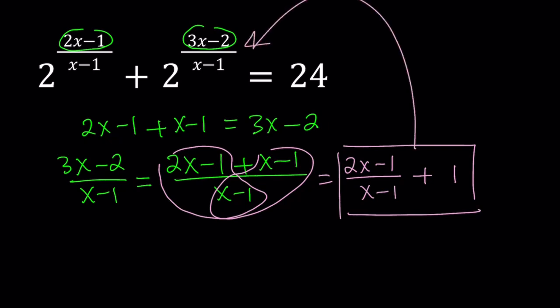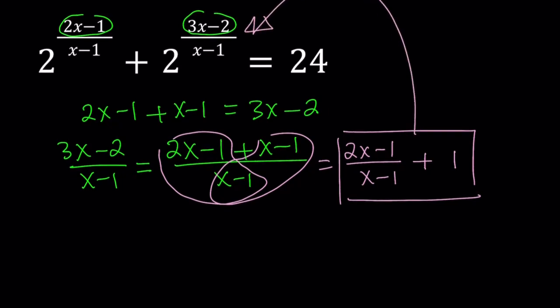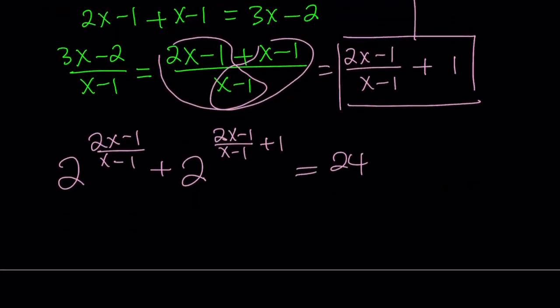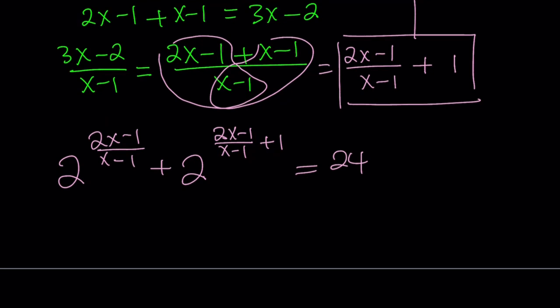Let's go ahead and replace the second fraction, which is the exponent, with that. That's going to give us 2 to the power of 2x minus 1 over x minus 1 plus... And then 2 to the power... Now, instead of 3x minus 2, I'm going to write 2x minus 1 over x minus 1 plus 1. And the sum is equal to 24. Nice. So we broke it down and then we wrote it that way.